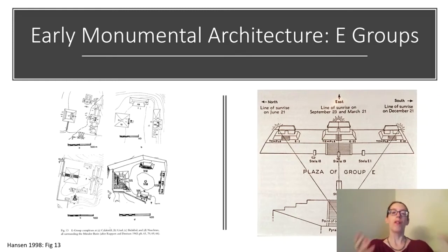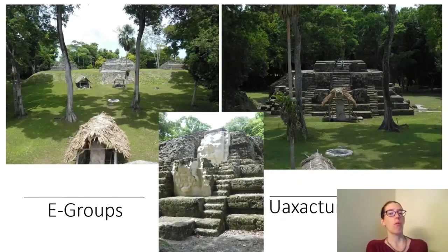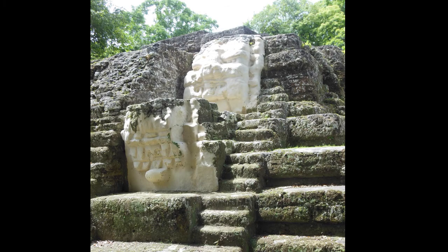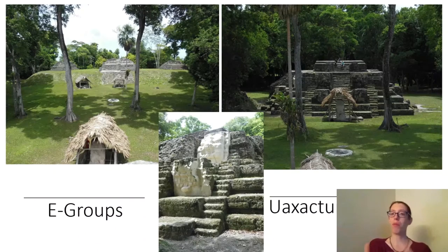The name E-group really has nothing to do with the function of it — it is simply named after the first one of these groups that was identified, the E-group found at Washaktun, a site in modern-day Guatemala. These are images of what the E-group at Washaktun looks like today after excavation and consolidation. You can see the smaller structure and then the larger main structure, along with a close-up of some of the plaster masks that decorated these structures. E-groups can also provide us with important information about how sedentism began in the Maya lowlands and its relationship with political authority and elite leaders during this time period.